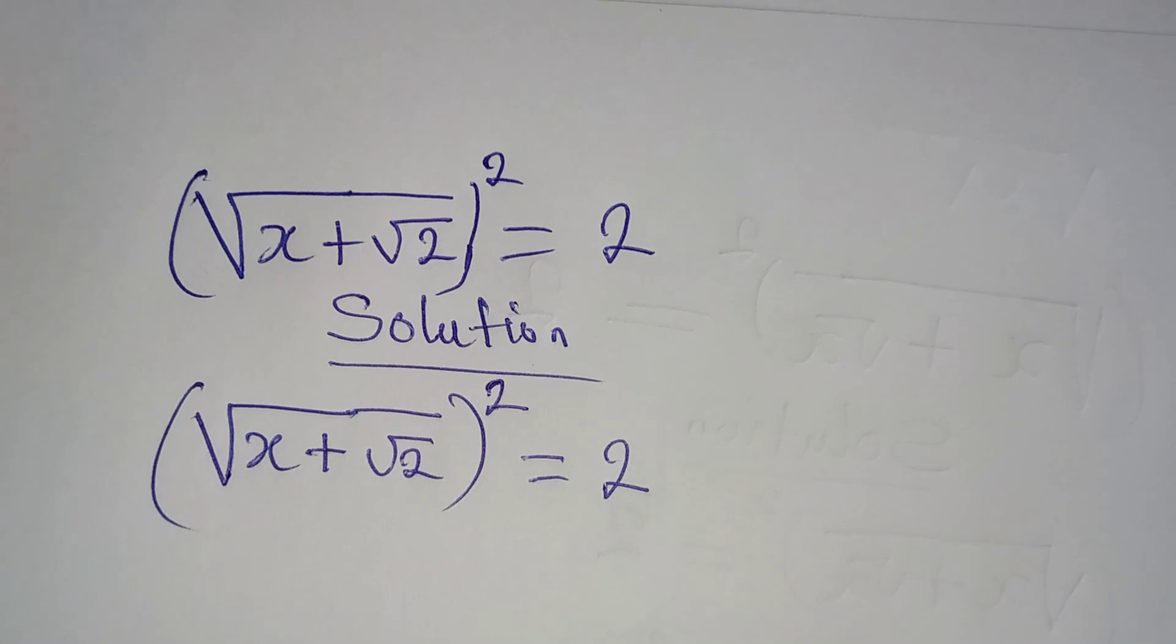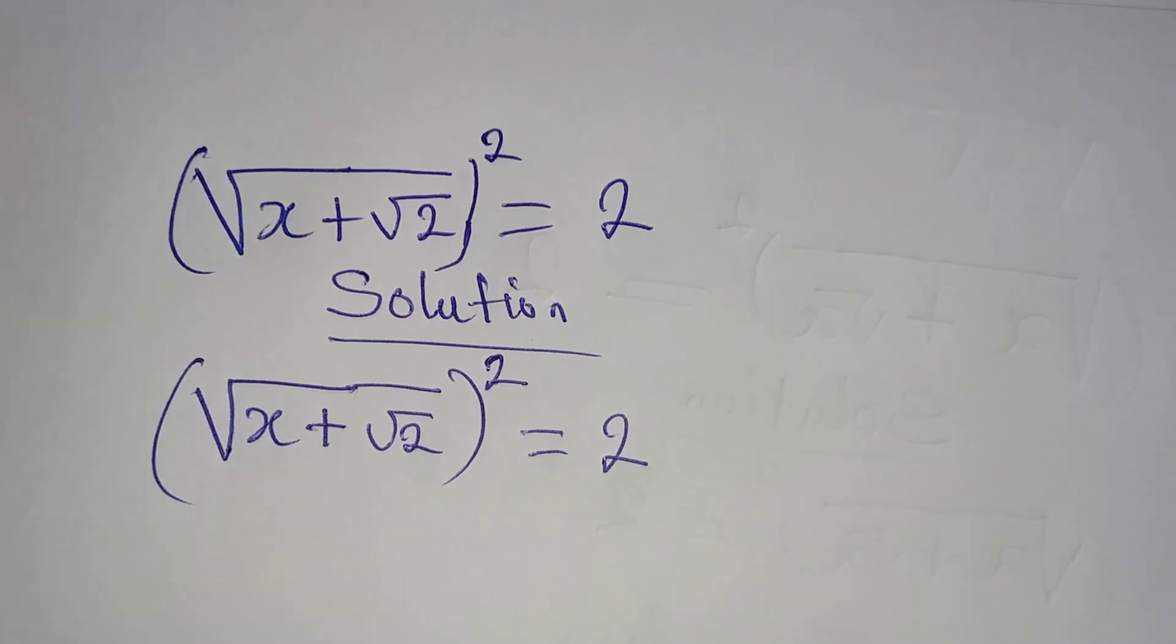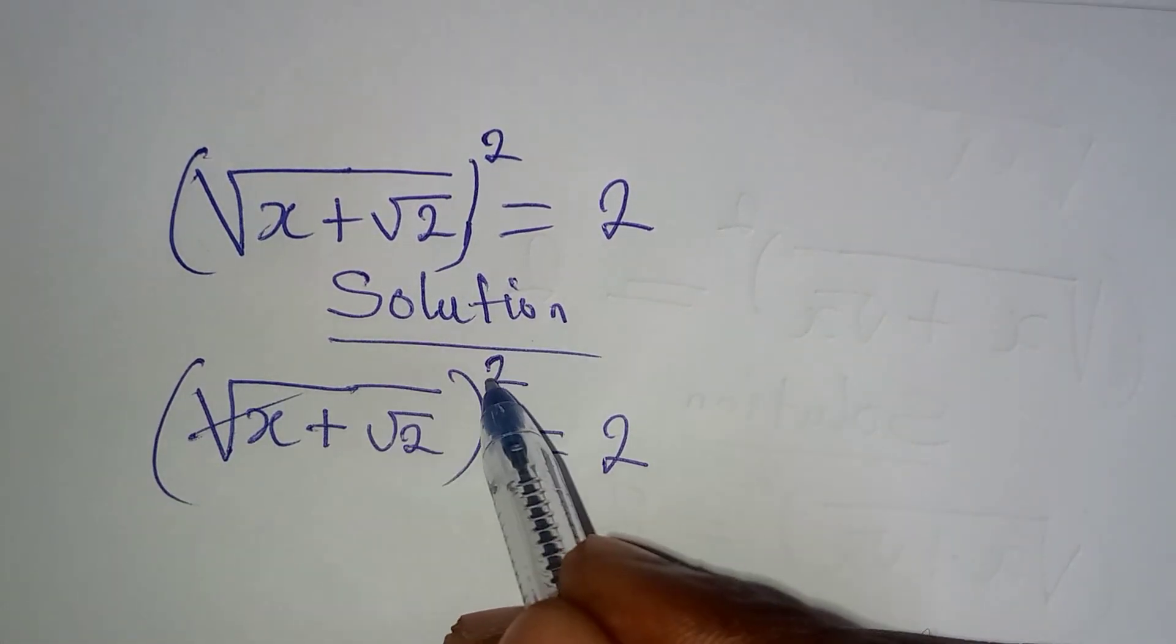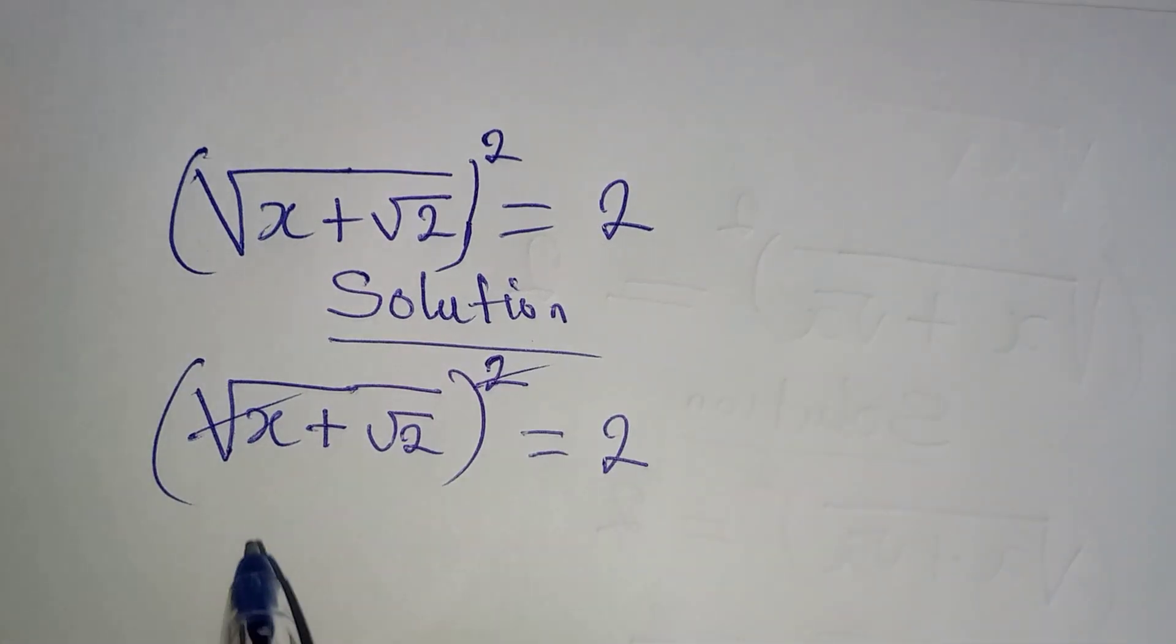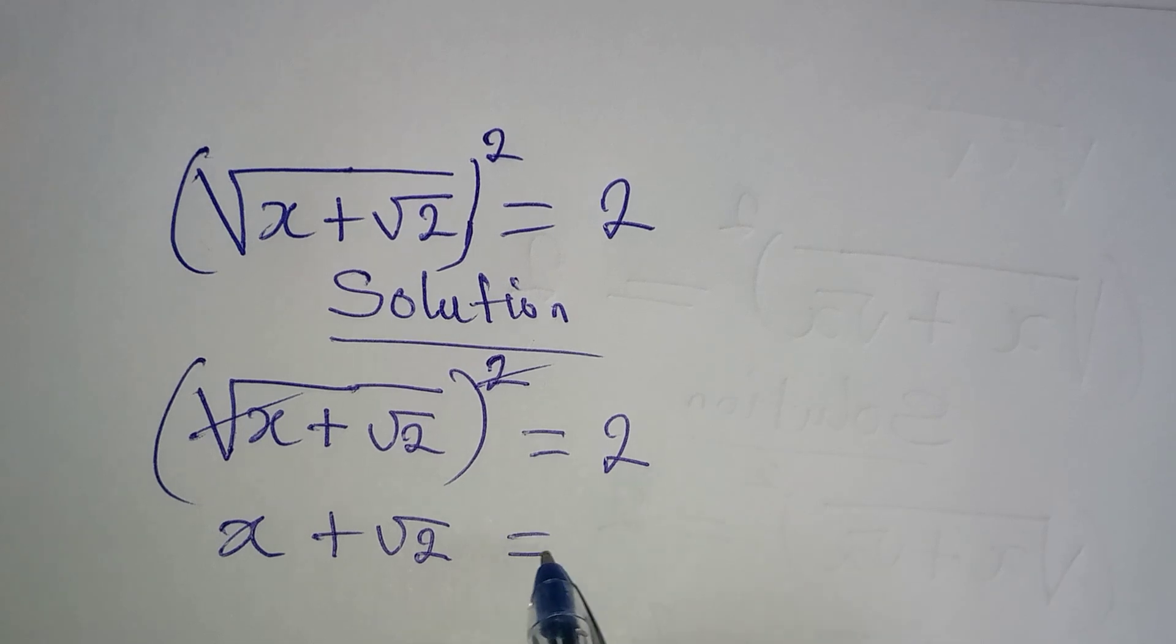Now your first step is obvious because this and this will cancel each other. And now we have x plus square root of 2 to be equal to 2.